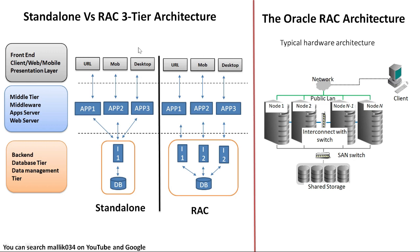The top layer is the end-user application — whoever the end user can access via URL, via mobile, a desktop client, a tablet, or any kind of device — that is my front-end or the top layer. The middle layer is my application servers, which could be WebLogic, Apache, Tomcat or anything.